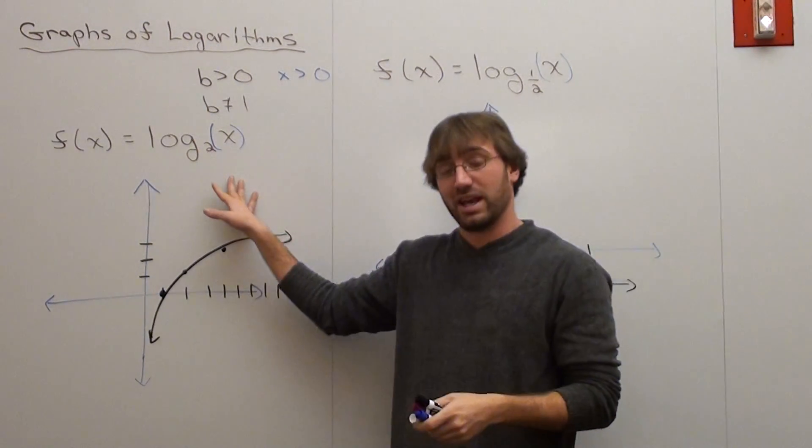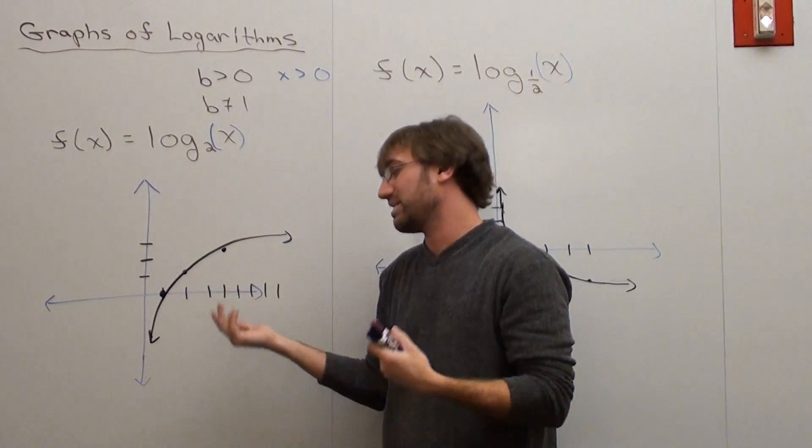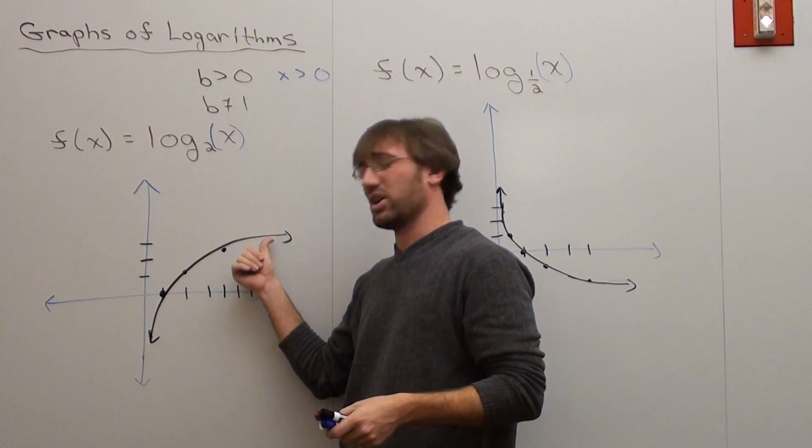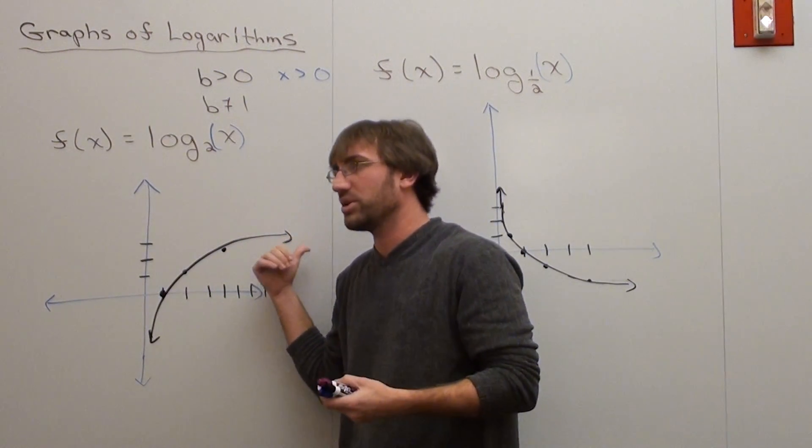Now this is an example of a log base 2 of x as best as I could draw it where there's a vertical asymptote at zero and it gradually rises. It's always going to rise.